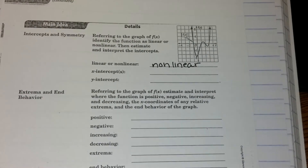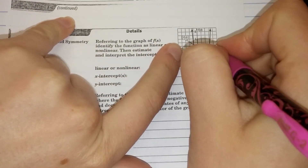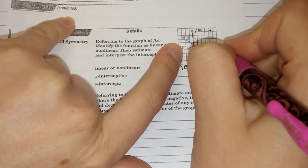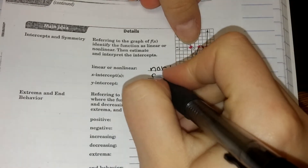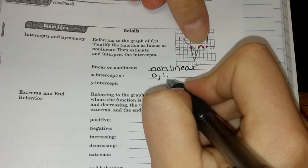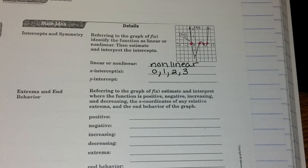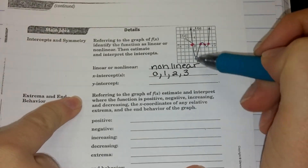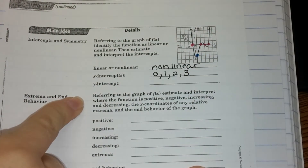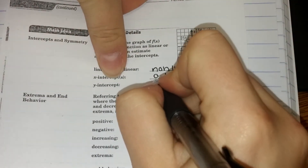X-intercepts are where the graph crosses the x-axis. Looking at the picture, I can see the graph crosses at 0, 1, 2, and 3. For the y-intercept, I look at where the graph crosses the y-axis. It crosses at one point, halfway between 4 and 8, so the y-intercept is at 6.